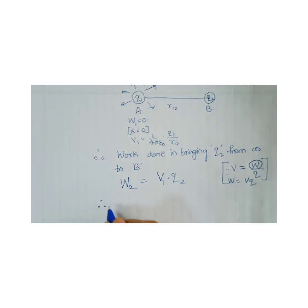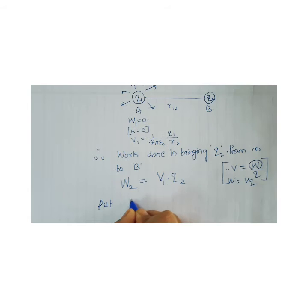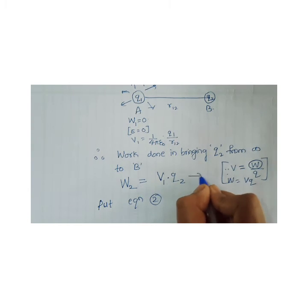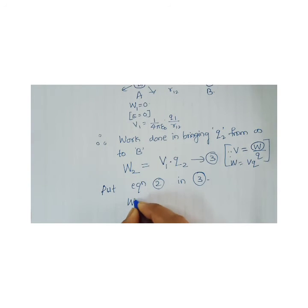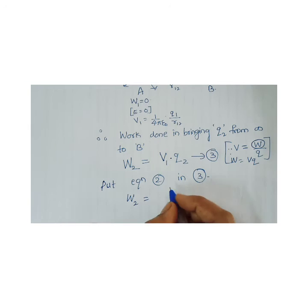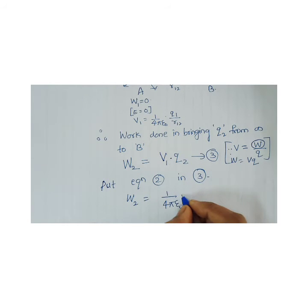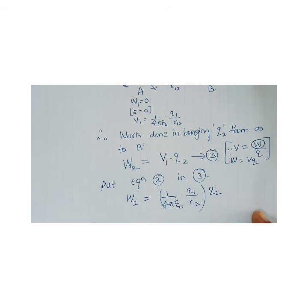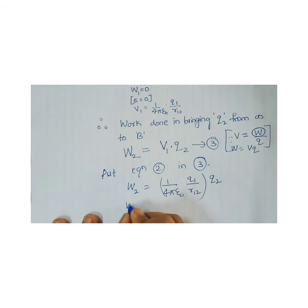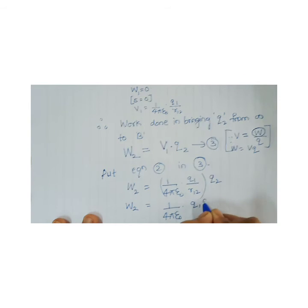Now I am going to substitute equation 2 into equation 3. So W2 = V1 × Q2 = (1/4πε₀) × (Q1 / R12) × Q2. Therefore W2 = (1/4πε₀) × (Q1 Q2 / R12). I will mention this as equation 4.